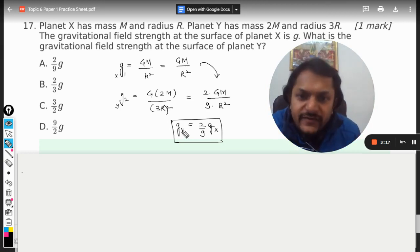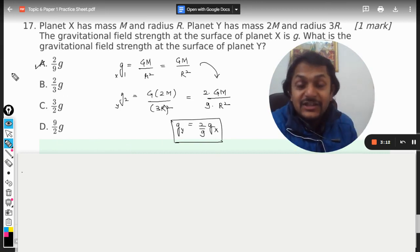So g_y is equal to 2/9 g_x and hence the answer is A. This is how we do this question my students.